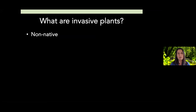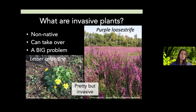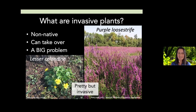So just to recap: invasive plants are typically non-native, they can take over, and they're a big problem. Here are a couple of invasive plants I selected because they're both beautiful — purple loosestrife and lesser celandine. Purple loosestrife is a real problem in wetland areas; it will take over an entire wetland and when it blooms it turns a gorgeous purple color, but it's a dense monoculture most of the year. Similarly, lesser celandine has great yellow flowers when it blooms, but goes dormant the rest of the year and does a lot of negative things. Just because something's pretty doesn't mean it's non-invasive.